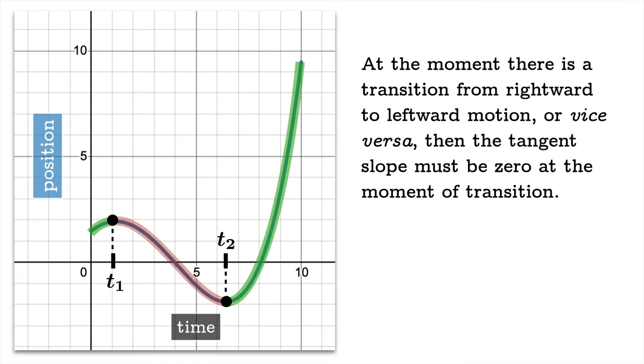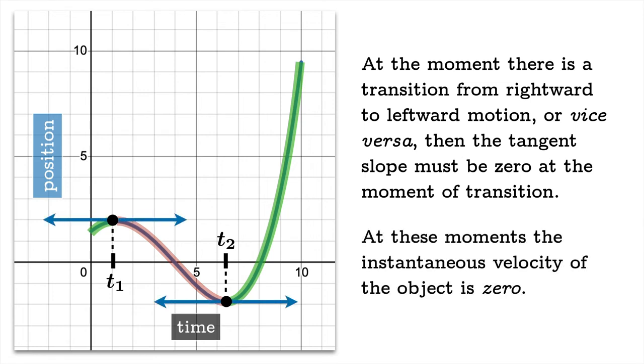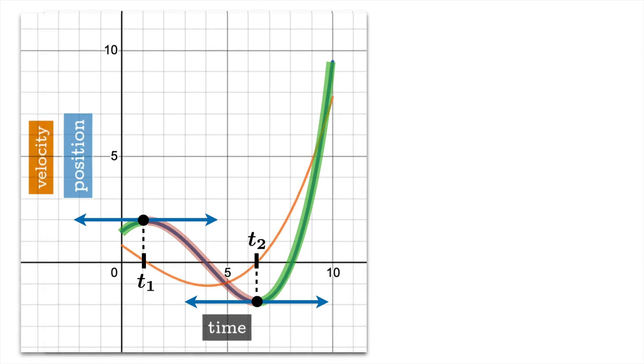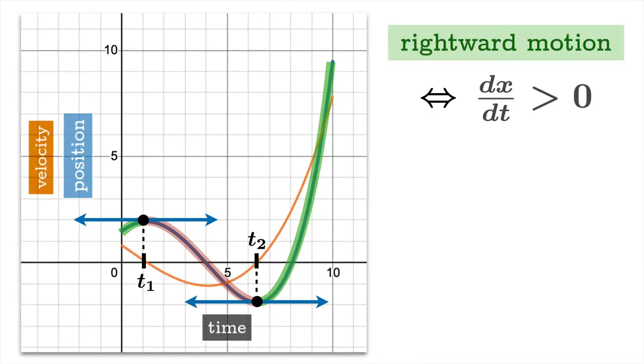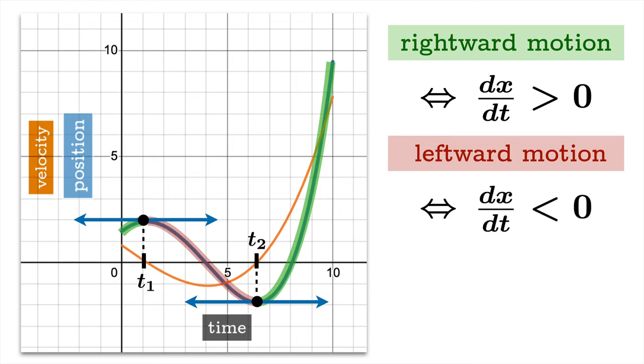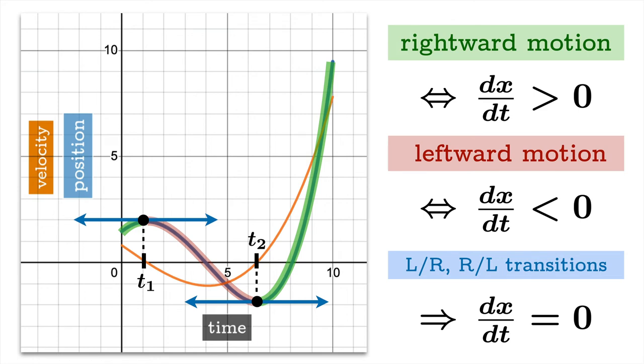And by the way, at the moment there's a transition from rightward to leftward motion or vice versa, then the tangent slope has to be zero at those moments of transition. At these moments the instantaneous velocity of the object is zero. So we know that rightward motion is equivalent to asserting the value of the derivative is positive. Leftward motion is equivalent to asserting the value of the derivative is negative. And when you have these moments of moving from left to right or right to left, these transitional moments, then you know that the derivative of position with respect to time must be zero.